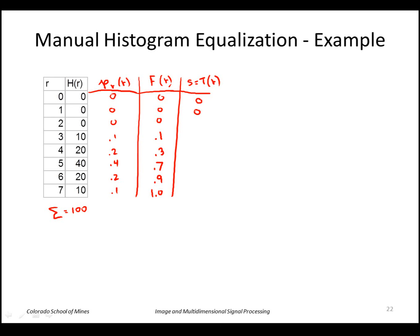7 times 0 is 0. 7 times 0.1 is 0.7, we round off to a 1. 7 times 0.3 is 2.1, we round off to 2 and so forth. That gives us this table here. That's our transformation function that will equalize the histogram.